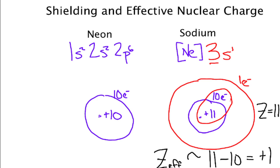So if we think about the effective nuclear charge for this little valence electron, Z effective now isn't 11 but it's actually 1.